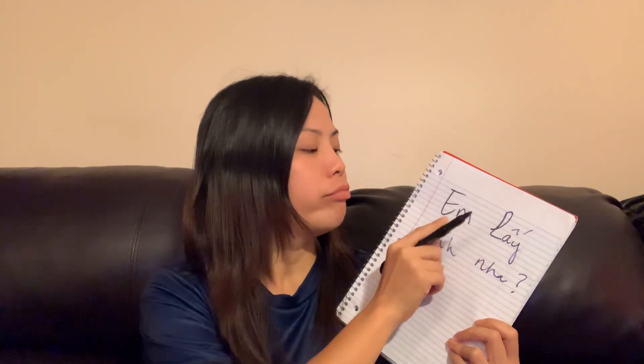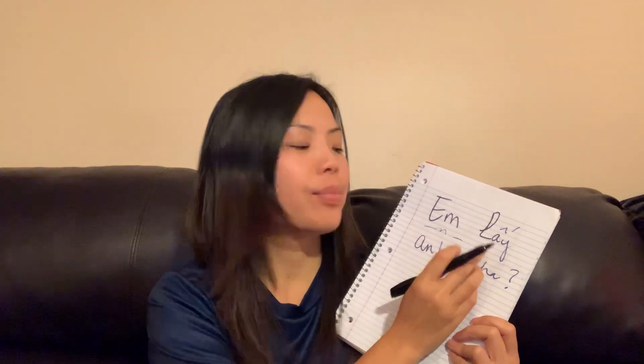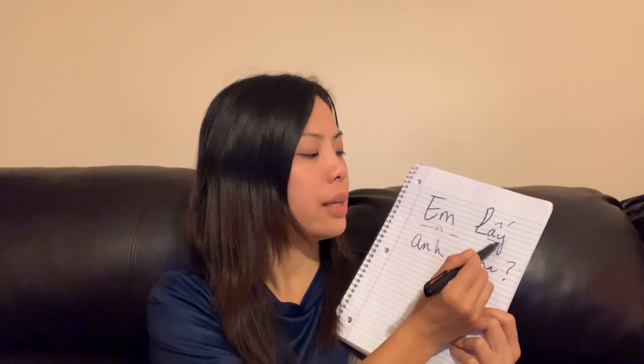In Vietnamese, to pronounce each word you pronounce all the letters within the word. So for 'em': the letter 'ê' and 'mờ' together give you 'em'. Now the next word is 'lấy'. The 'l' is pronounced like 'lờ', and these two letters here together make 'ê', so you get 'lê'.